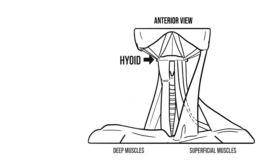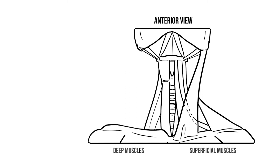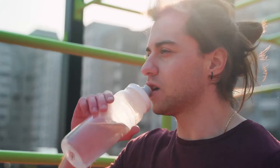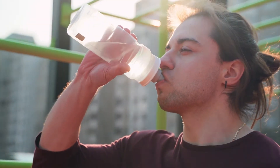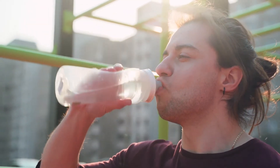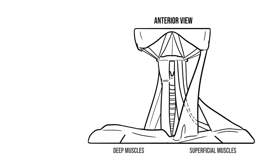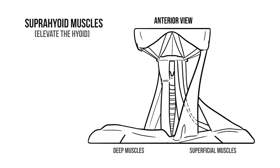First we have the hyoid bone with the laryngeal cartilages hanging down. We also have groups of muscles that allow the hyoid to move up and down during swallowing and speech. The group above the hyoid are known as the suprahyoid muscles, and these all work together to elevate the hyoid.